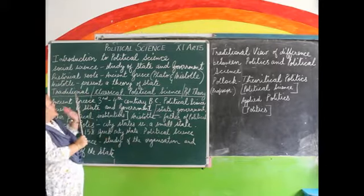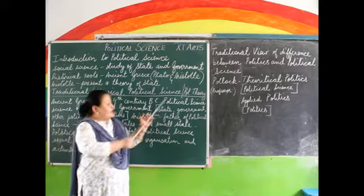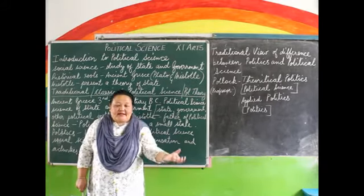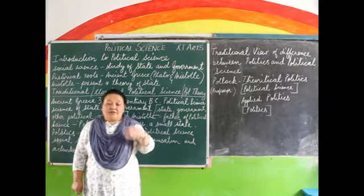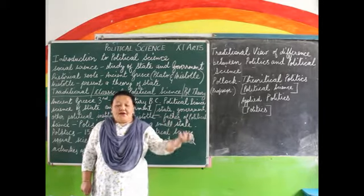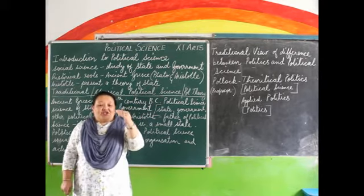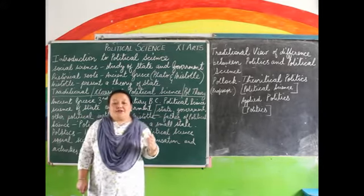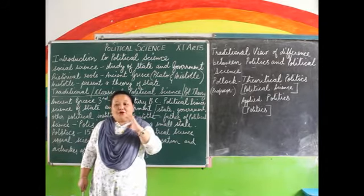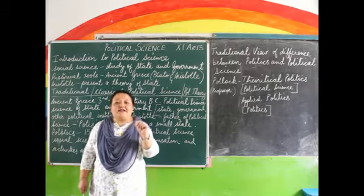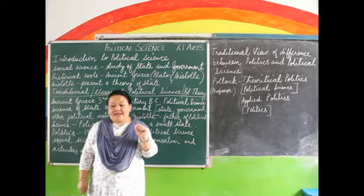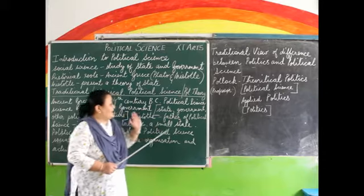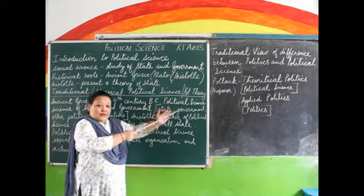Now we will move on with the traditional or the classical political science, or political theory. Political science is an old discipline as well as a new discipline. So what was the view of the state and government in the earlier years — in the 3rd and 4th century when the study of state had just come into existence? Aristotle is the father of political science and the first person to come up with the theory of state. Theory means a system of ideas explaining something, especially based on general principles.